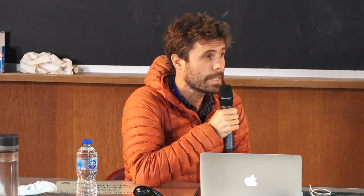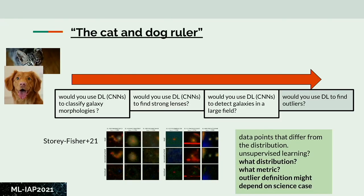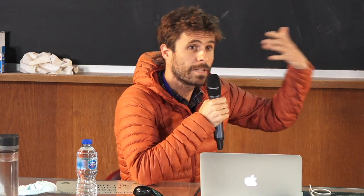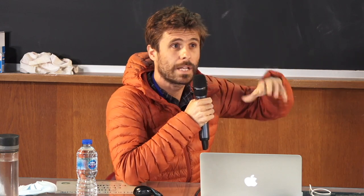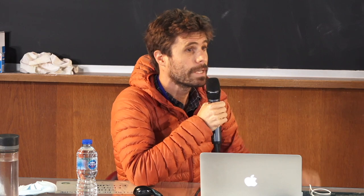Finding outliers is a big question where machine learning is very promising. You're trying to find data that differ from the overall distribution, so you probably want to go to unsupervised learning, since you're looking for something outside your distribution. But it's similar to a classification problem — you want to find a specific class of objects without knowing what you're finding. The outlier definition depends on the science problem, and you can't just go to scikit-learn, grab all the possibilities to find outliers, and expect it to work for your specific science case.